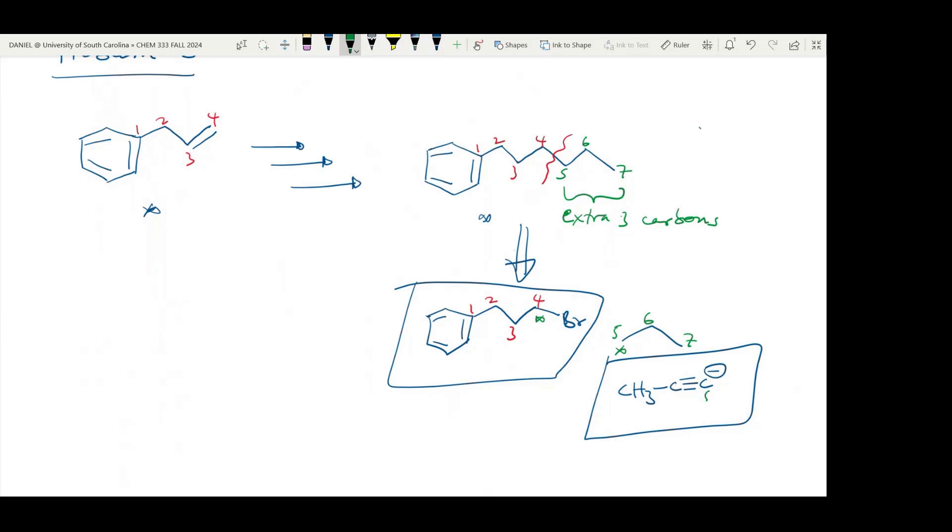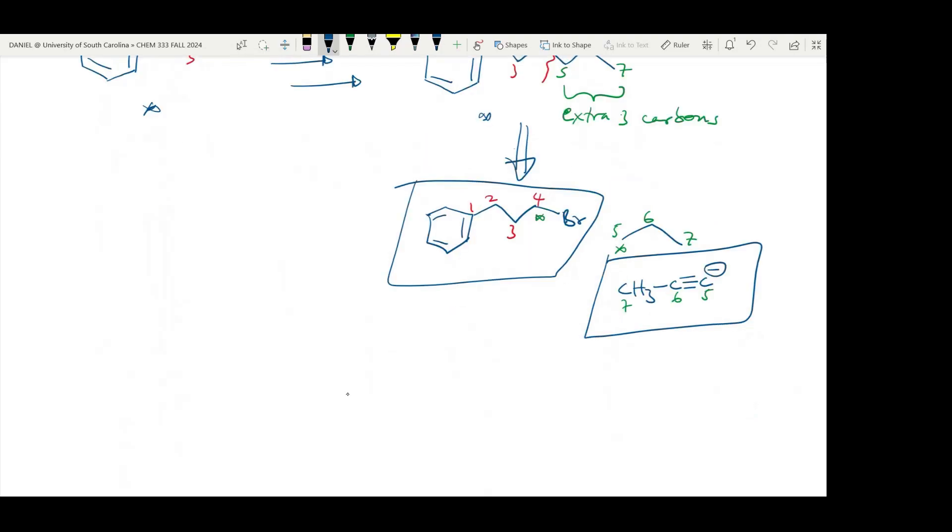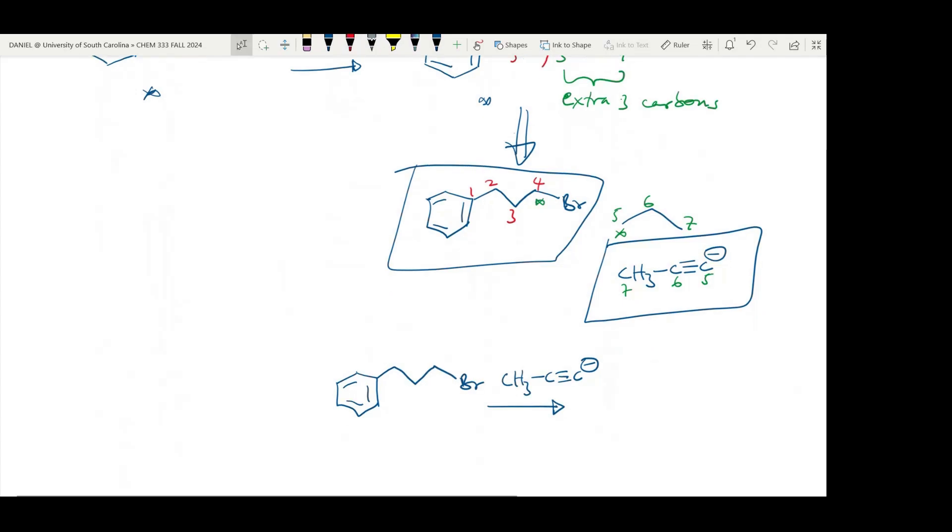So this would be 5, 6, 7. Having done this, we can now begin our synthesis problem. I will react the alkyl halide with the deprotonated alkyne. Let's number this as 1, 2, 3, 4. And here we have 5, 6, 7. And here we have SN2.